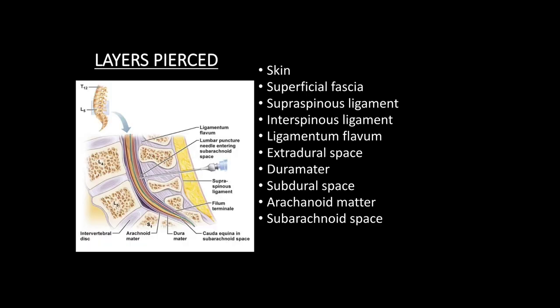Now we will discuss the layers traversed during lumbar puncture. The layers are: skin, superficial fascia, supra-spinous ligament, inter-spinous ligament, ligamentum flavum, extradural space, dura mater, sub-dural space, arachnoid mater, and subarachnoid space.